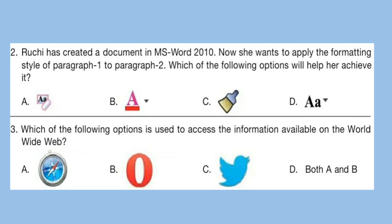Question 3: Which of the following options is used to access the information available on the World Wide Web? The correct answer is option D — both A and B.